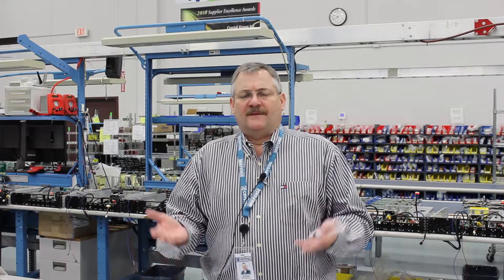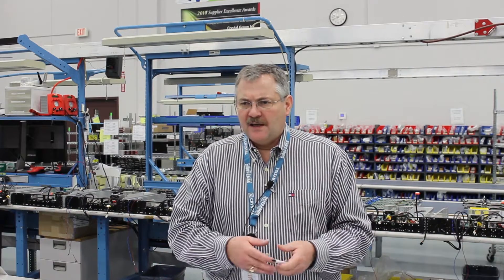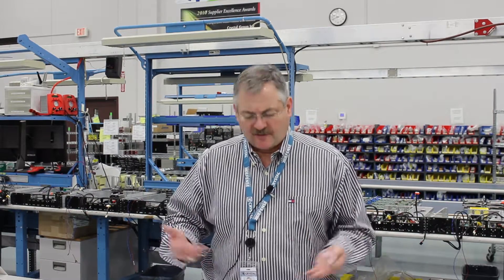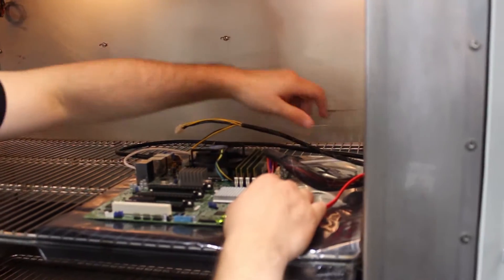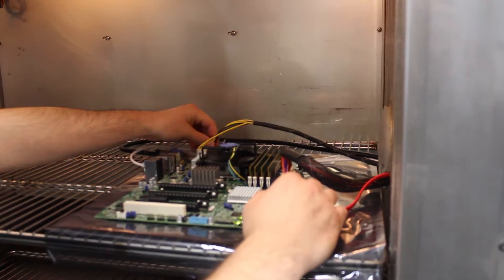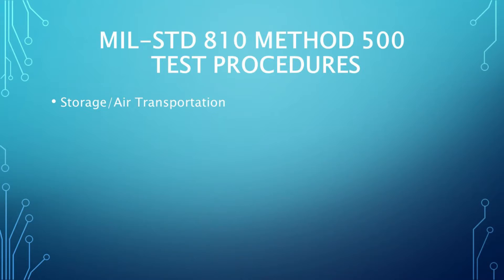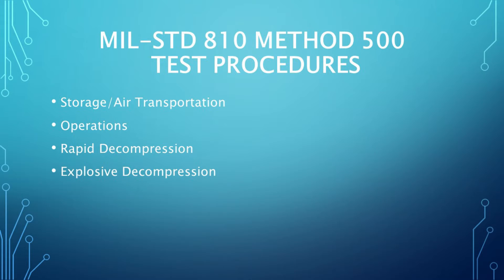What kind of heights are we talking about? Generally you're in the 15,000 to 40,000 foot range in this test spec, depending on whether it's transportation or operation. There are four test procedures in this method: storage, operations, rapid decompression, and explosive decompression.